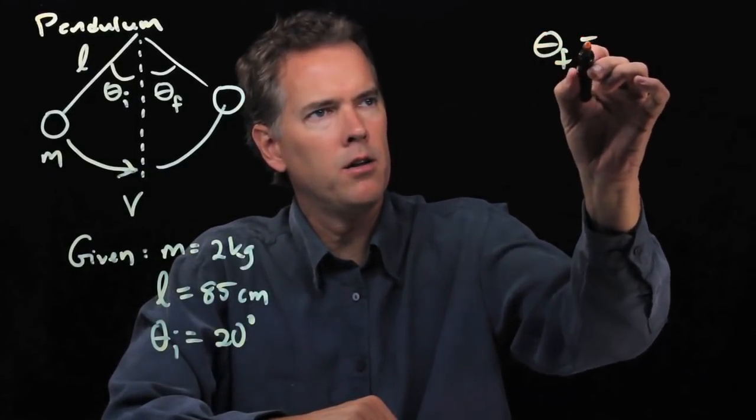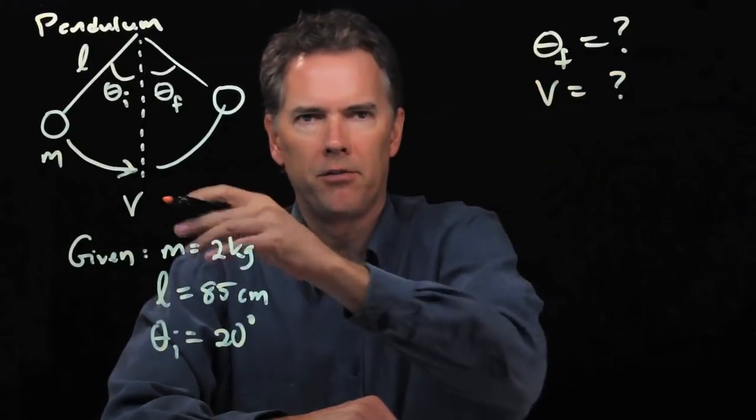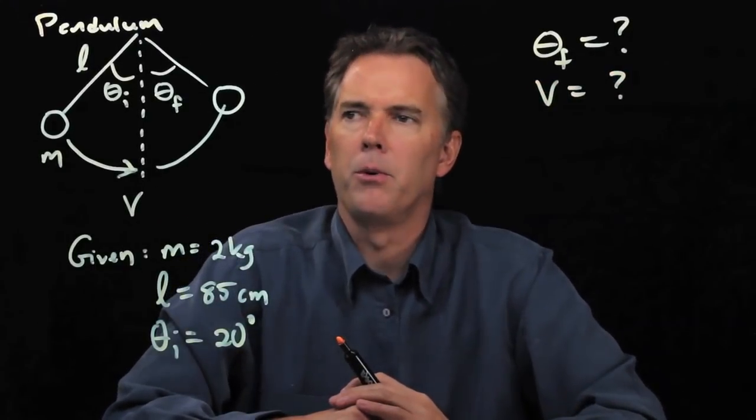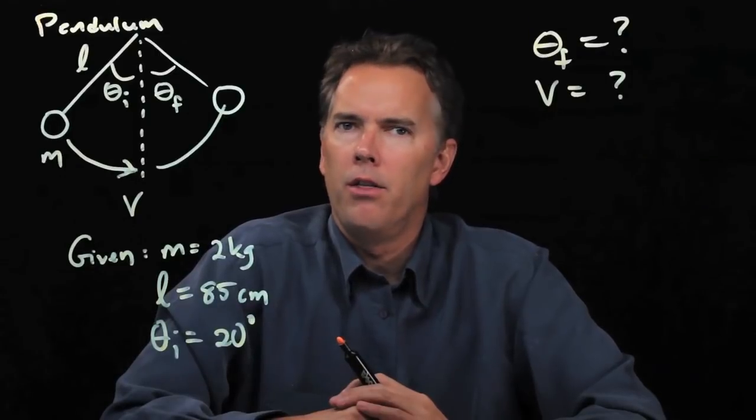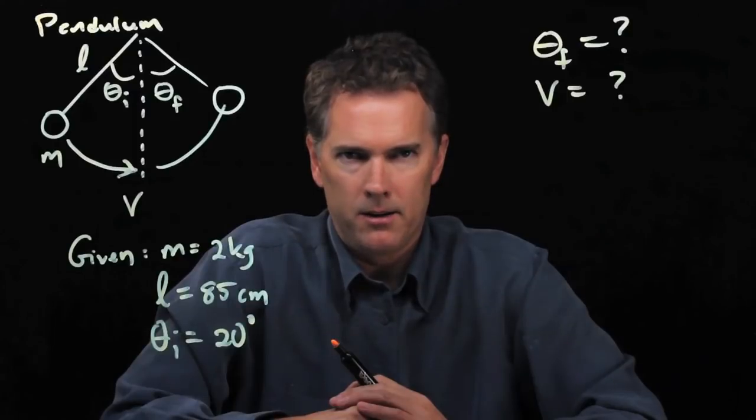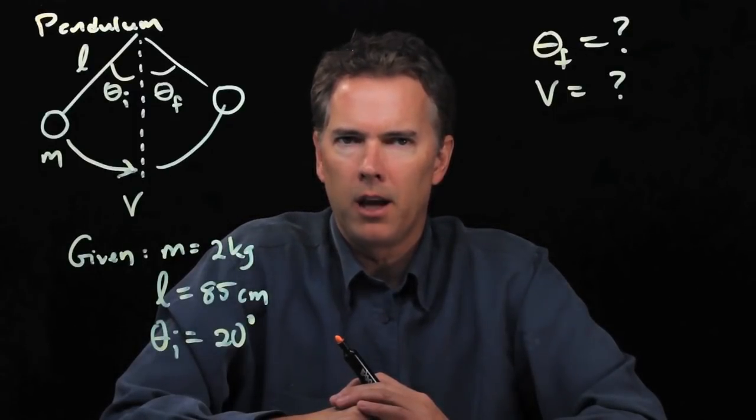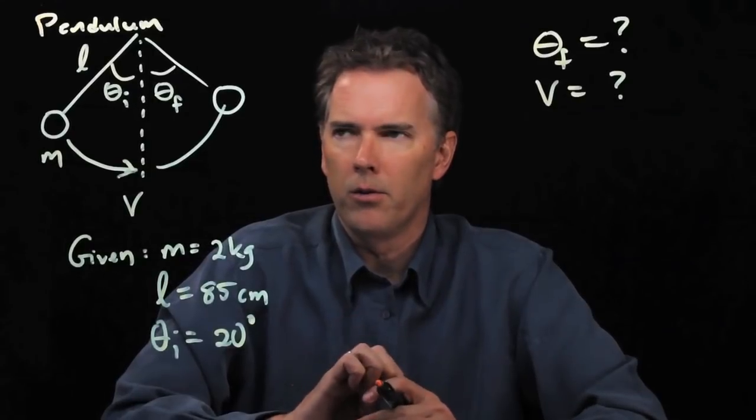Then swing back up to some theta f. Let's ask the following questions: What is theta f, and what is the max speed at the bottom of its swing? Well, theta f must be equal to theta i. The reason that theta f has to be equal to theta i, ignoring air resistance of course,